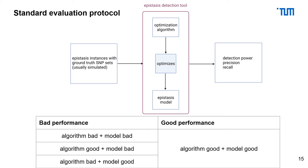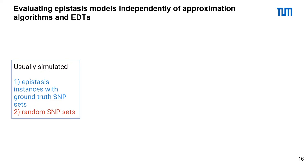This is why we created a new evaluation protocol to determine the performance of the epistasis model by itself. As before, our data is usually simulated. As an input, we use epistasis instances with ground truth SNP sets. As a second input, our protocol requires random SNP sets. Then we use the epistasis model we want to evaluate to calculate the score for the ground truth SNP sets and the randomly generated SNP sets.